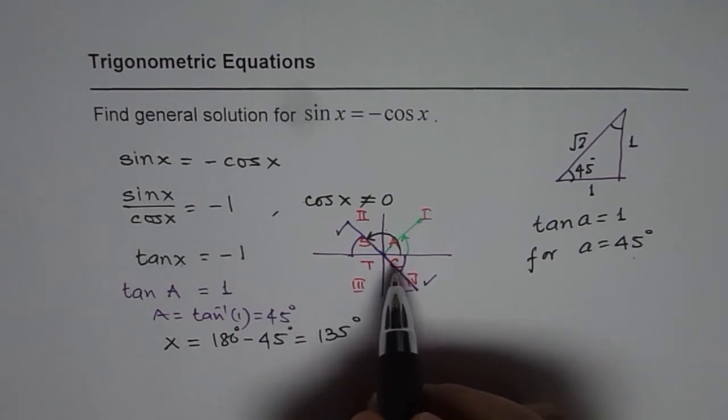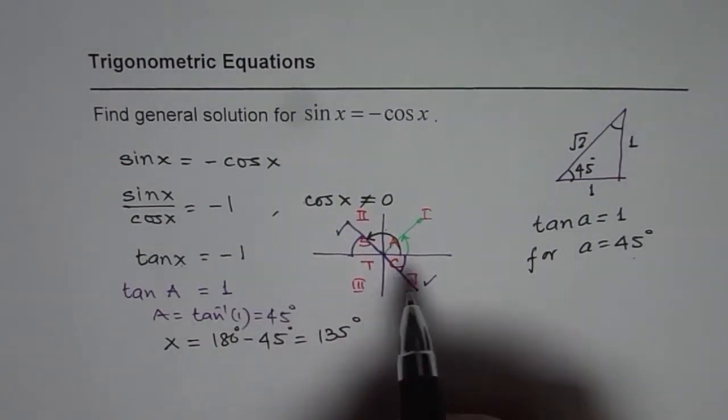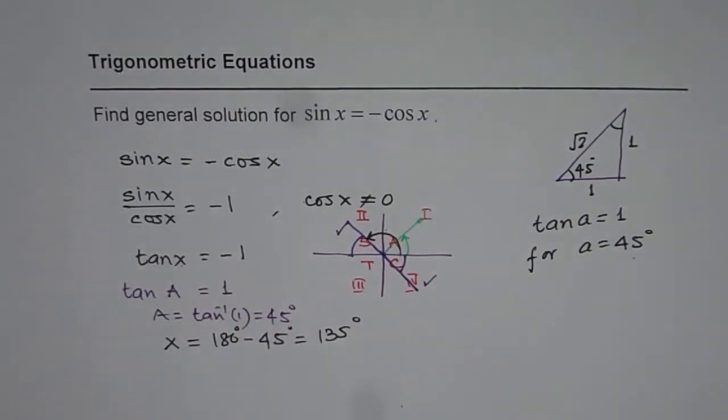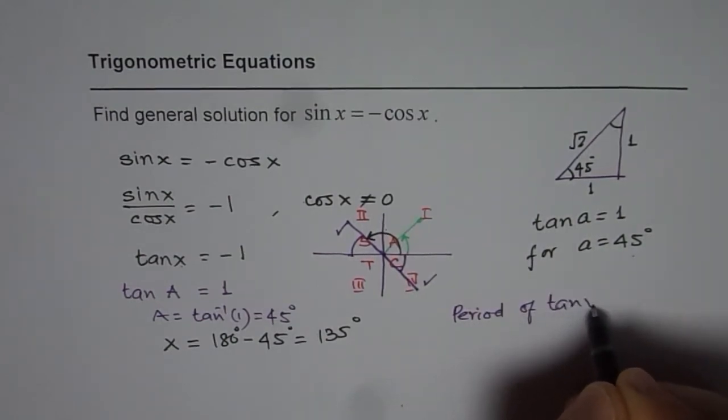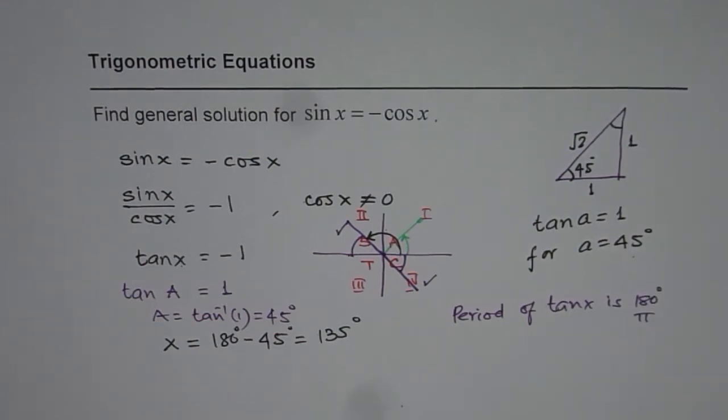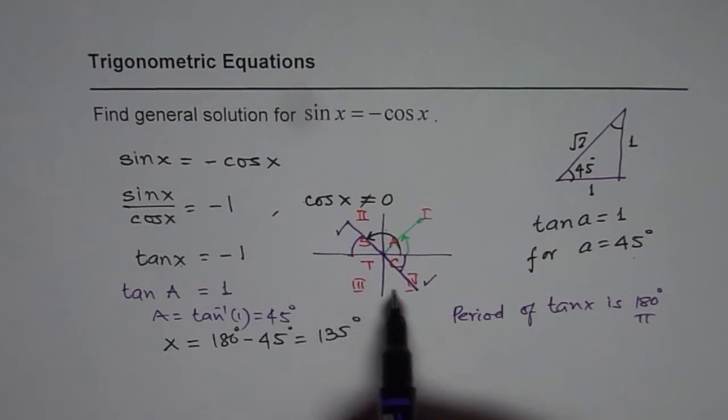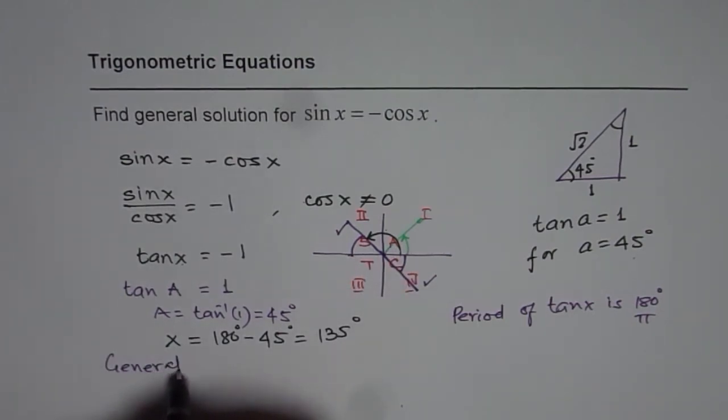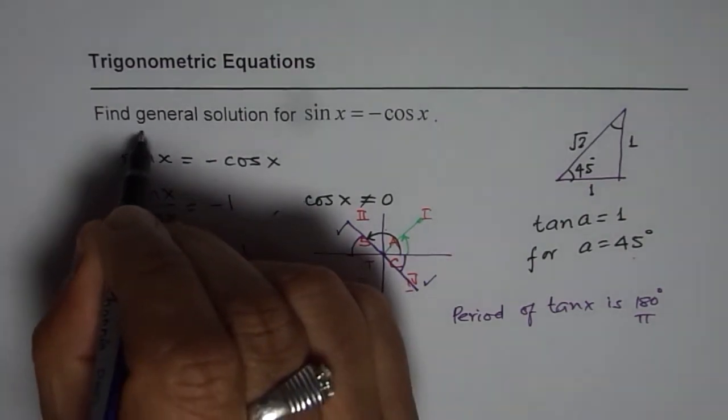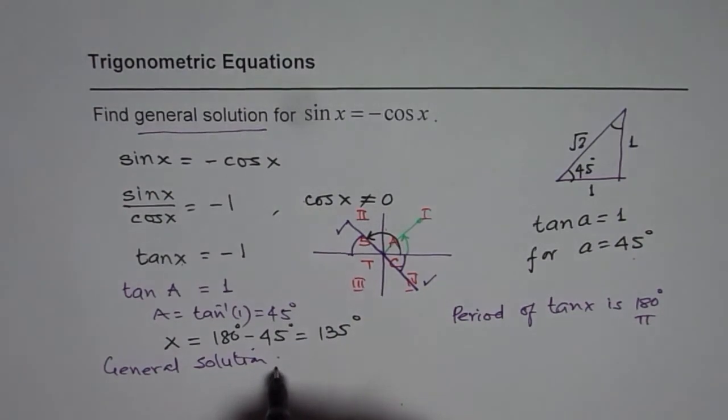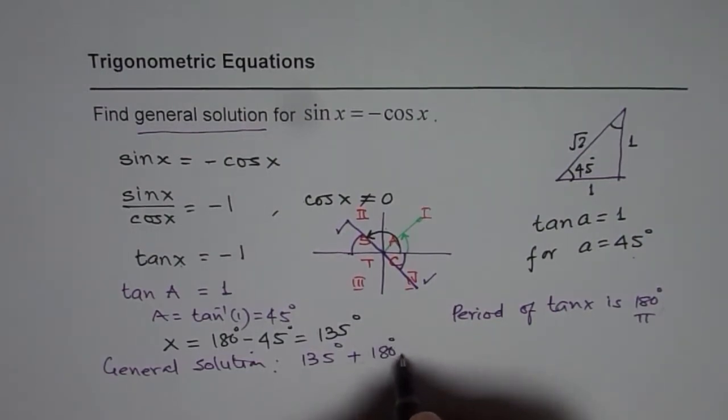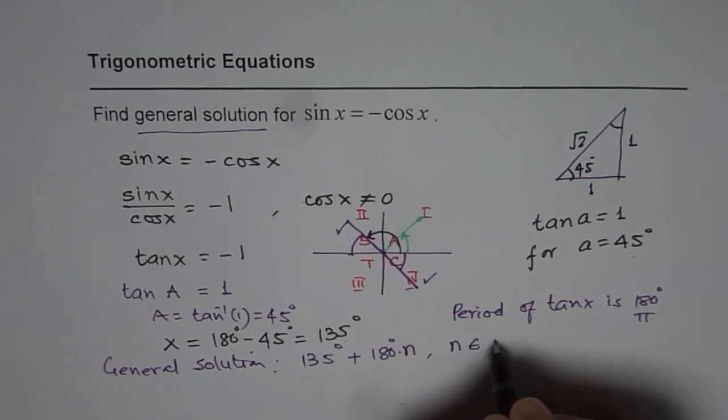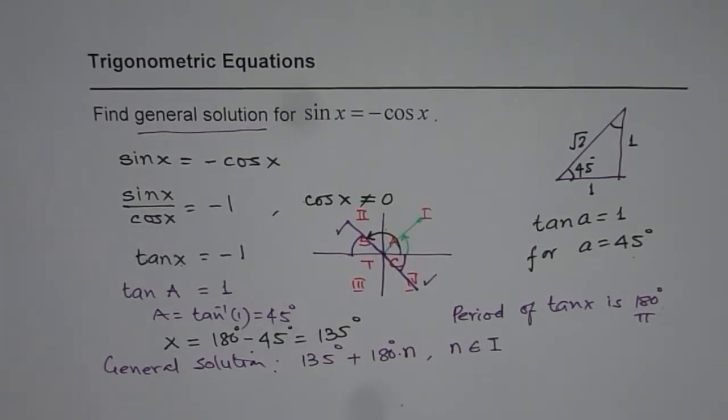So that is one of the angles. But tan repeats after every 180 degrees. So you know period of tan is 180 degrees. We know period of tan x is 180 degrees or π. So since it repeats after every 180 degrees, general answer should be what? Or general solution will be what? That is what we are interested in finding for the given equation. So the general solution will be 135 degrees plus multiples of 180. So we say 180 degrees n times, where n belongs to set of integers. It could be plus or minus. So 135 degrees plus 180 degrees n, 135 degrees minus 180 degrees. So that becomes our general solution.